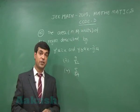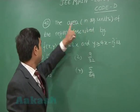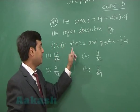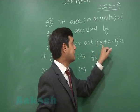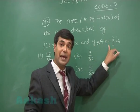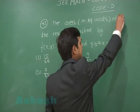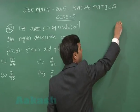Let us go for the next one. The area in square units of the region described by (x, y) such that y² ≤ 2x and y ≥ 4x - 1 is. So a question from integration, that is area under the curve. Let us draw the curve.